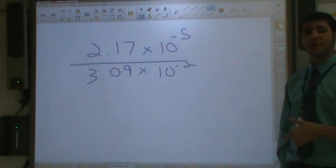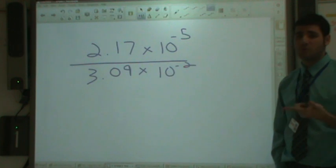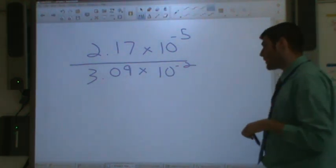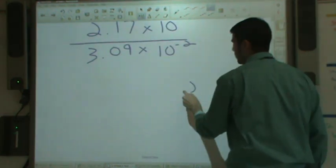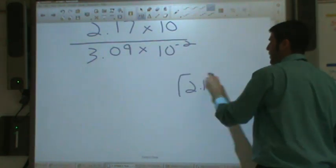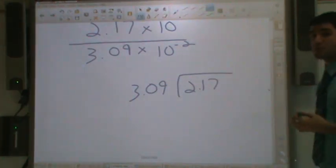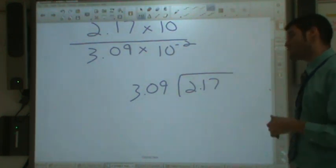We're going to take these two and divide them. Step one for a division problem with scientific notation is we divide the coefficients. Make sure you set it up correctly. This is 2.17 divided by 3.09.